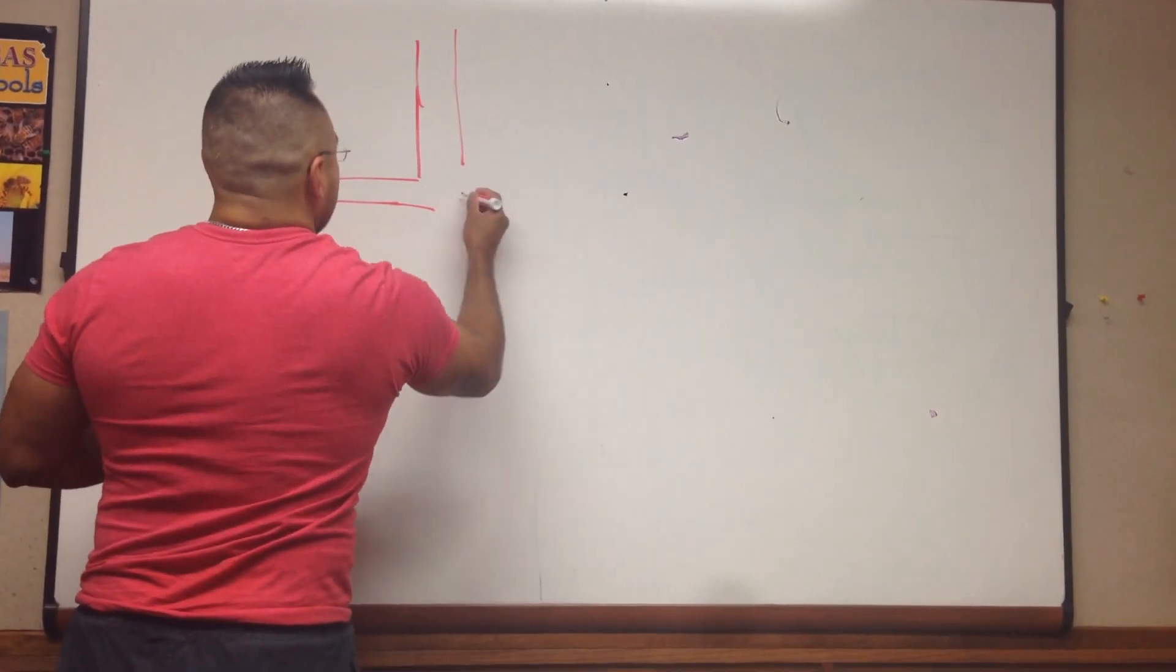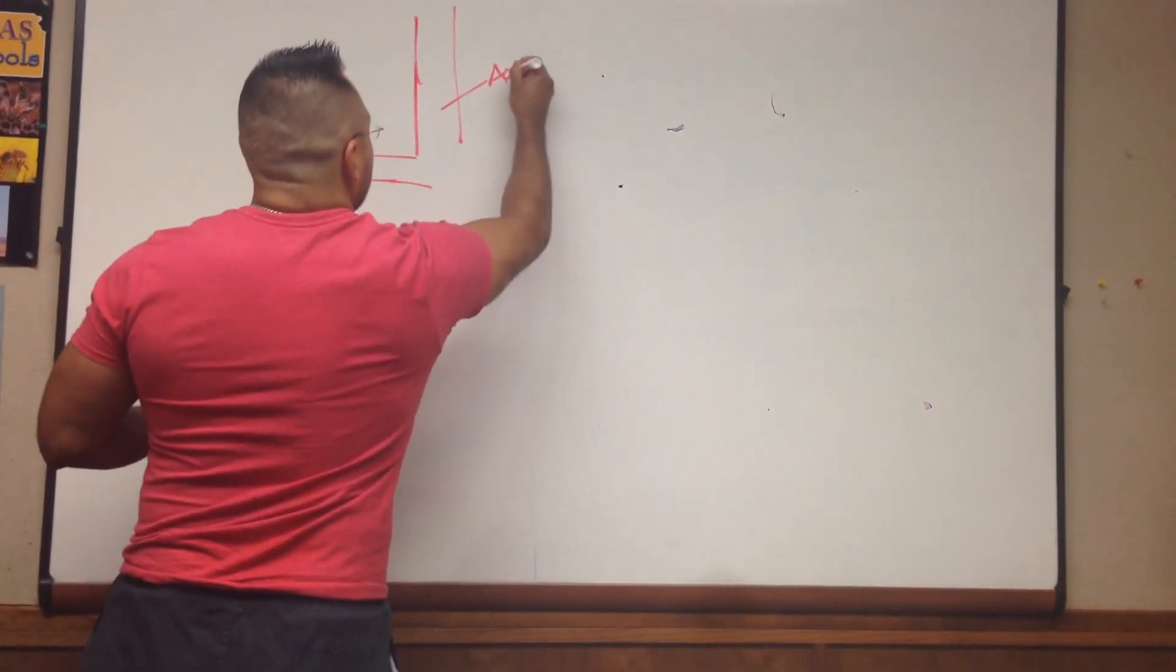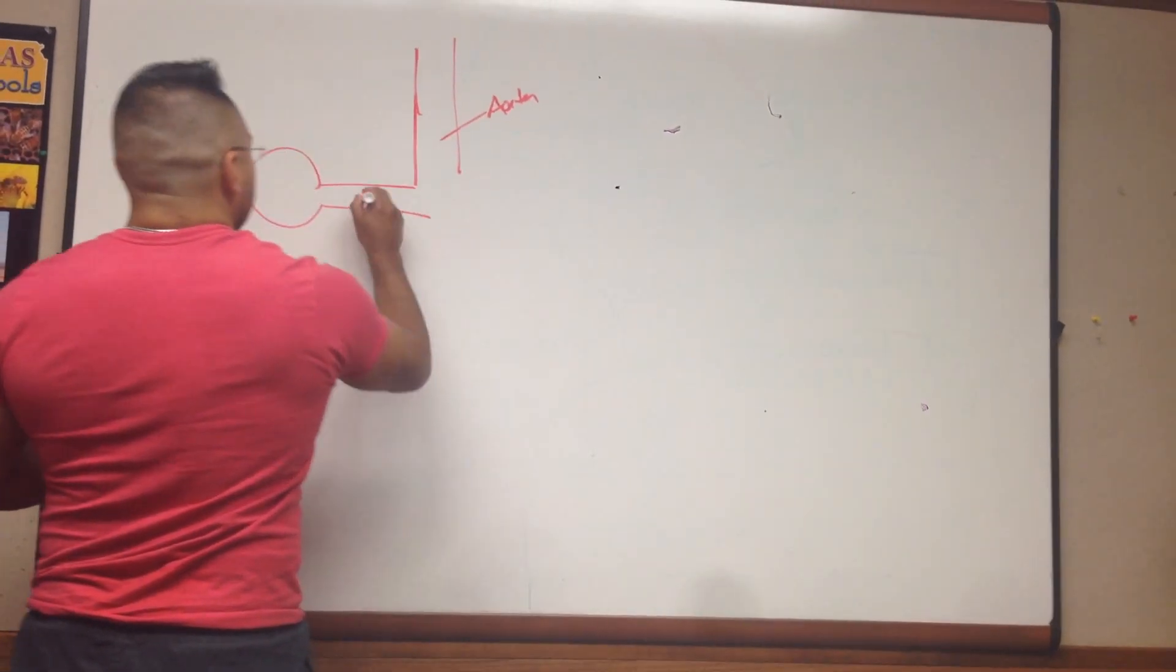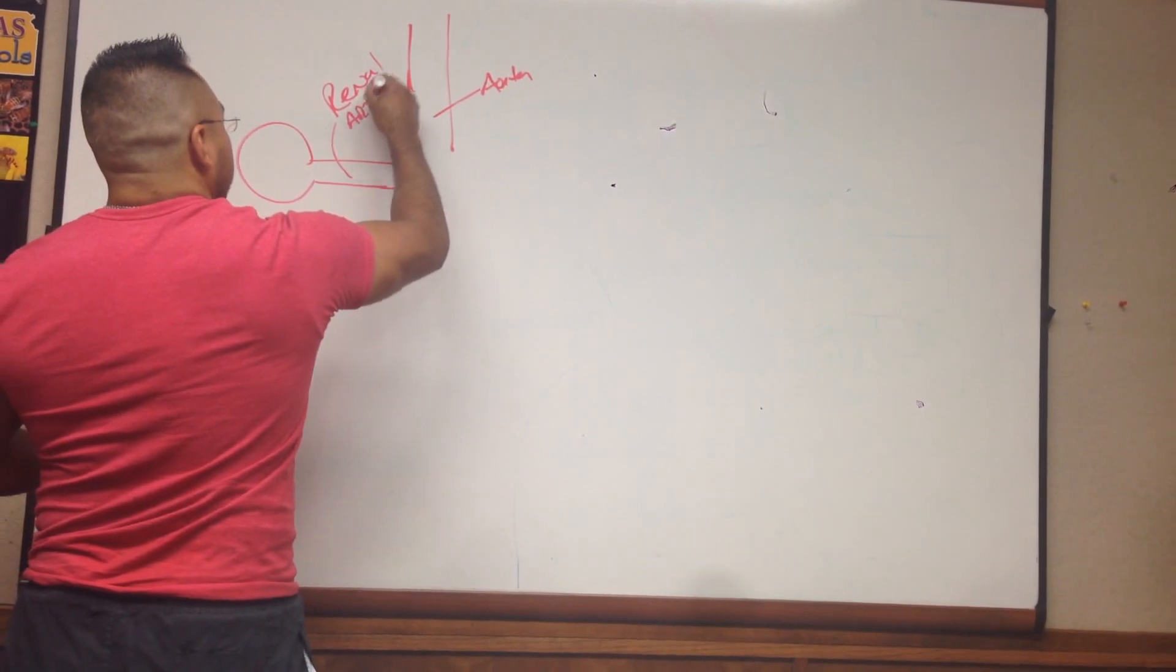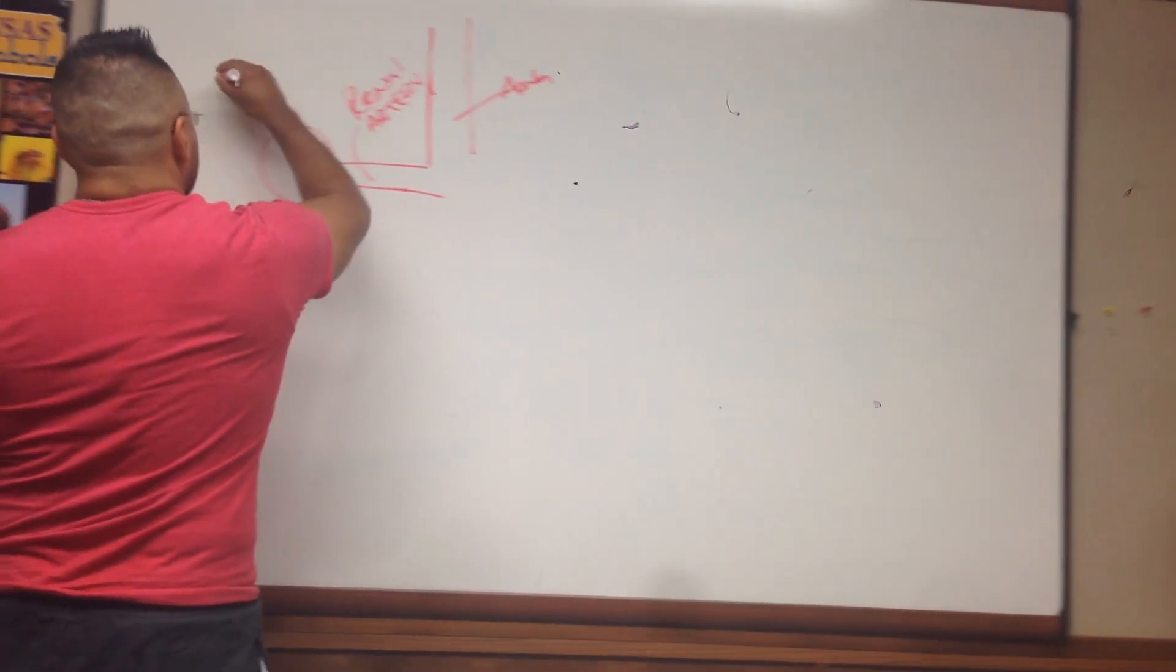Let's pretend this is the aorta. This would be a renal artery. This would be a kidney.